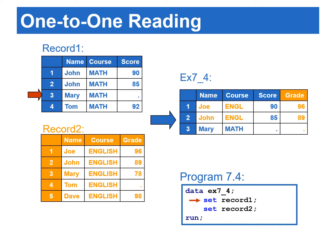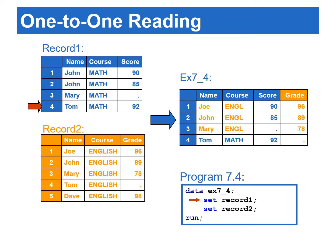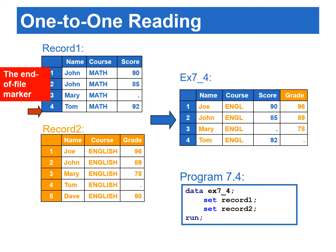During the second iteration of the data step execution, the first set statement copies the second observation from record one. The second set statement copies the second observation from record two. Again, the values for name and course variables are from record two instead of record one. During the third iteration, the first set statement copies the third observation from record one, and the second set statement copies the third observation from record two. During the fourth iteration, the first set statement copies the fourth observation from record one, and the second set statement copies the fourth observation from record two. After reading the last observation from record one, SAS reaches the end of file marker and stops execution.